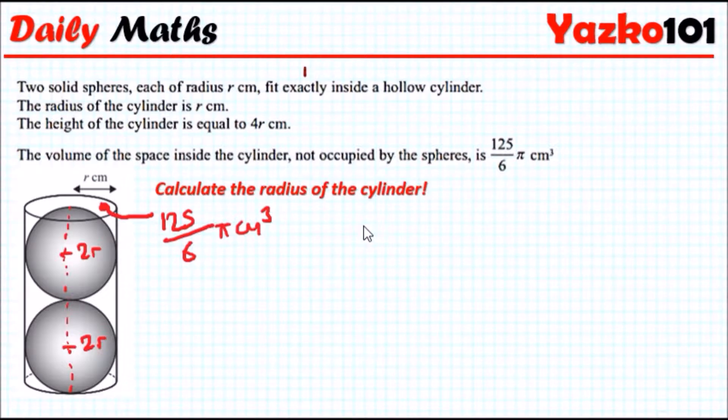Now, what I would do here is accumulate everything. The total volume of the two spheres plus the empty cylinder space will equal the volume of the cylinder itself, as if it was covered.